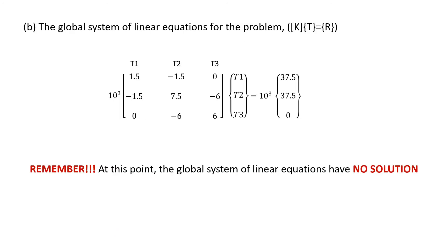Once we have defined the global conductivity matrix and the global heat rate vector, we can write the global system of linear equation for this problem as KT equal to R. However, at this point, the global system of linear equation has no solution. We have to impose the boundary conditions first, then only we can determine the unknown temperatures. That will be discussed in the next video in part 2.